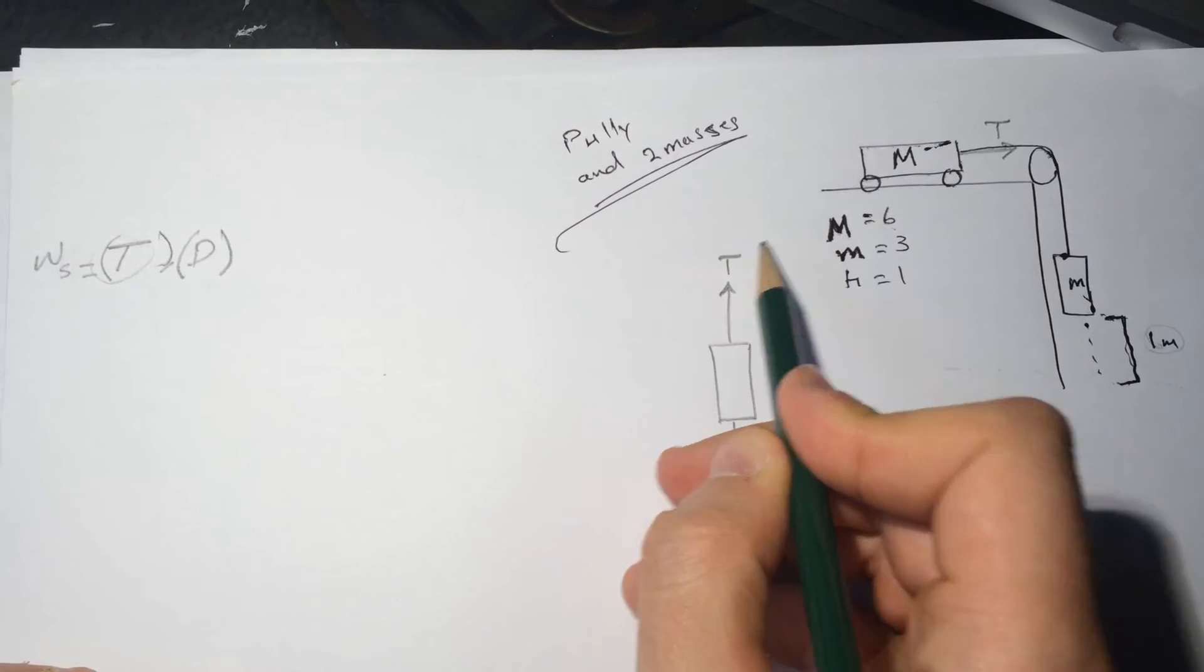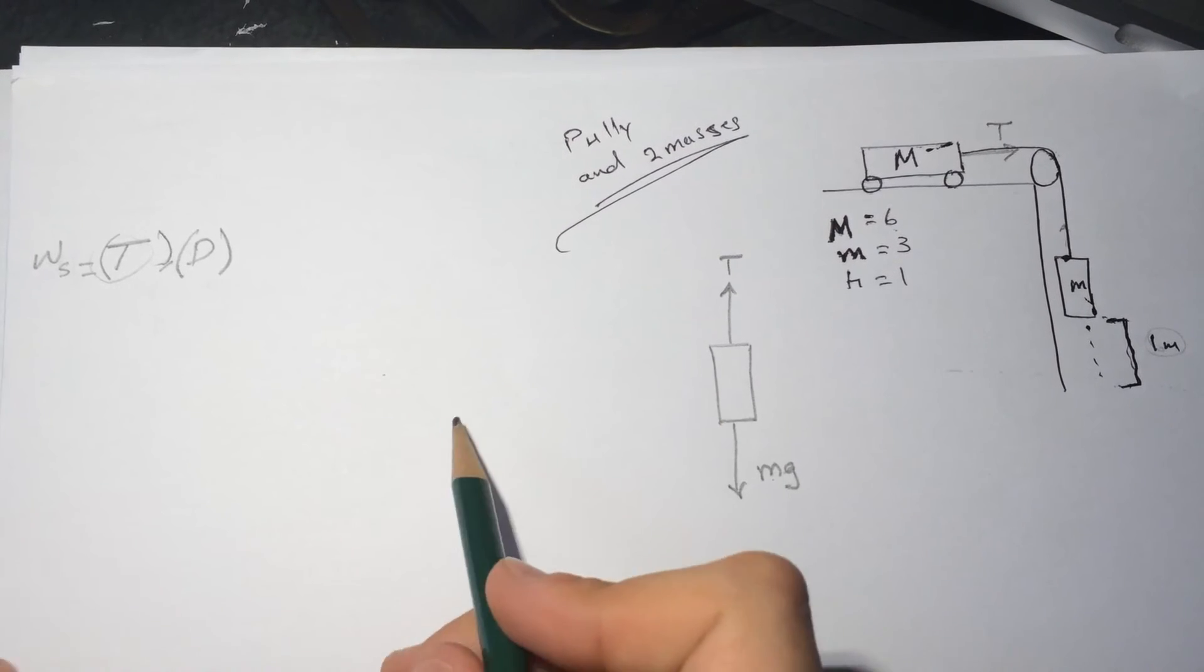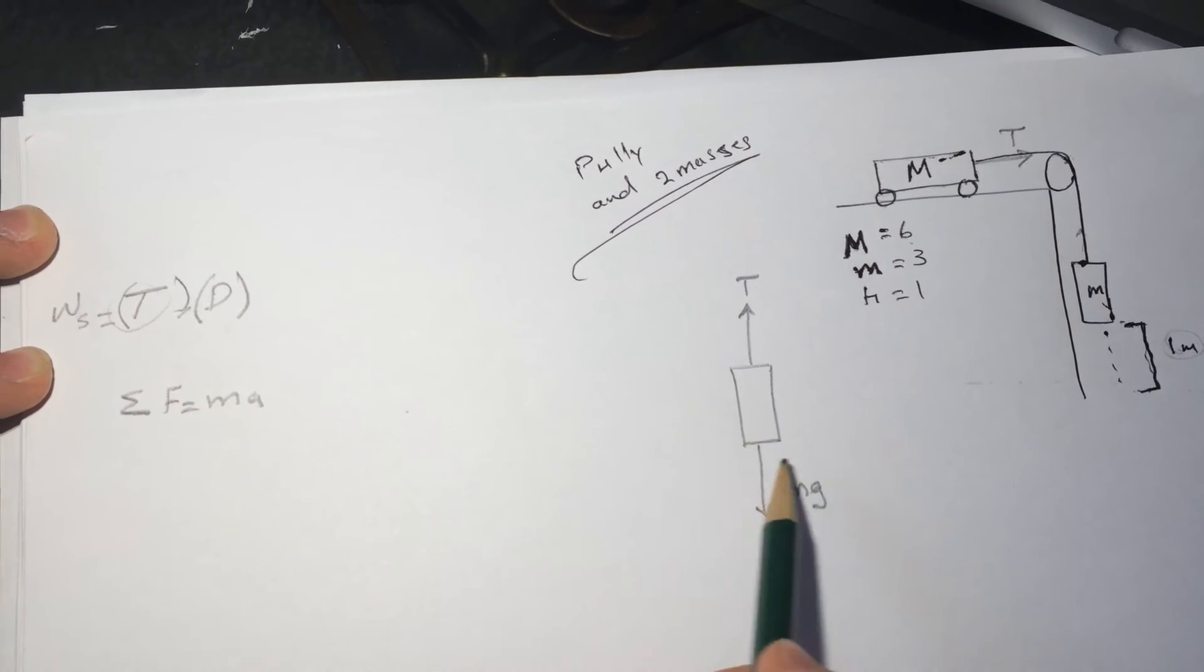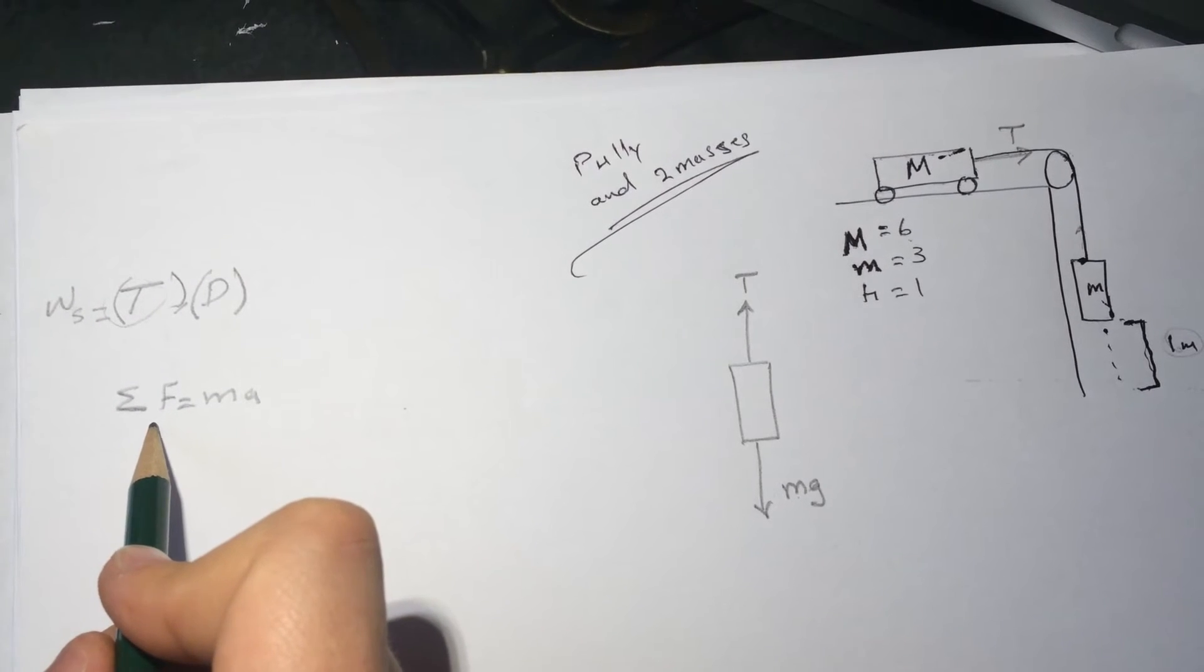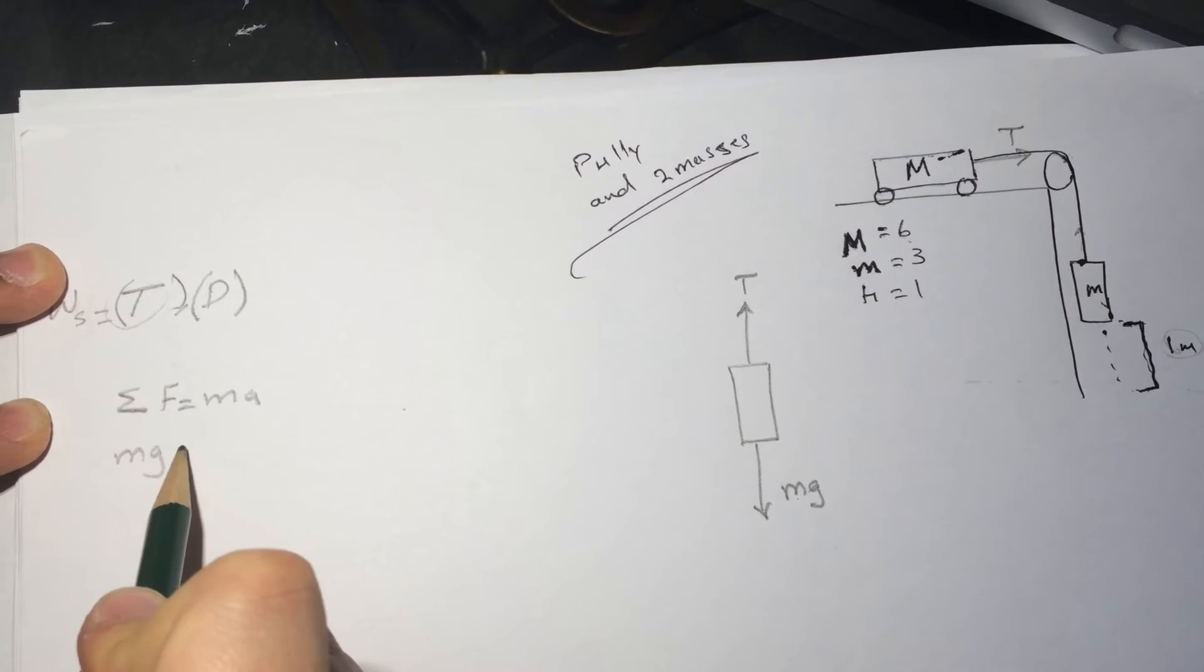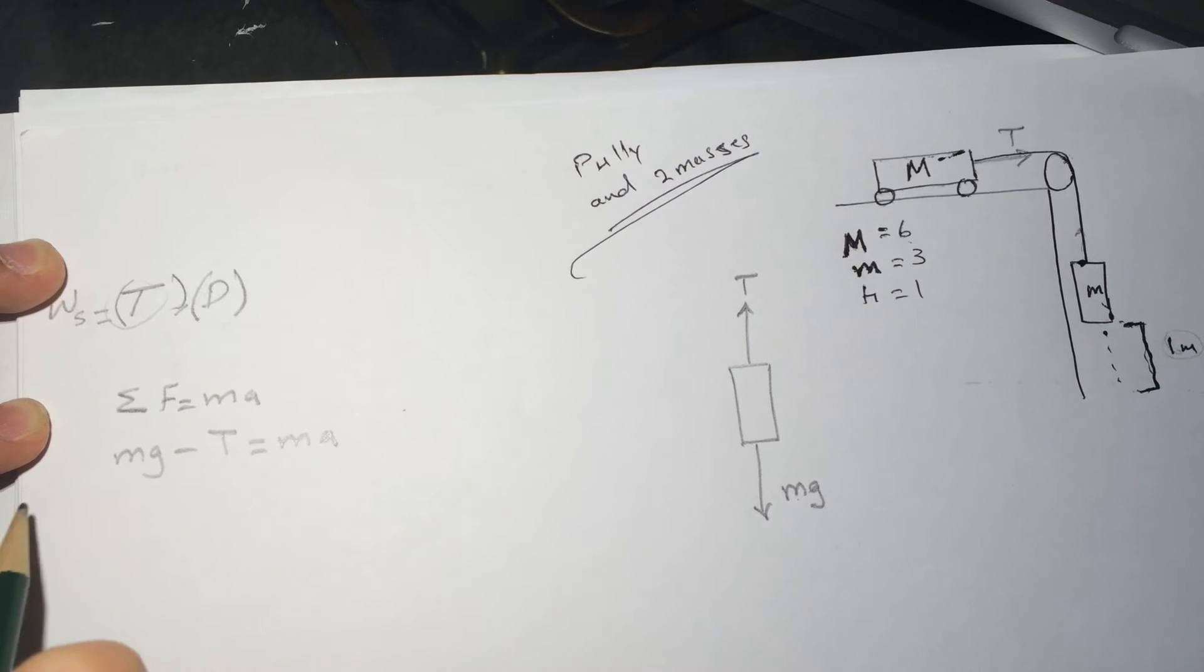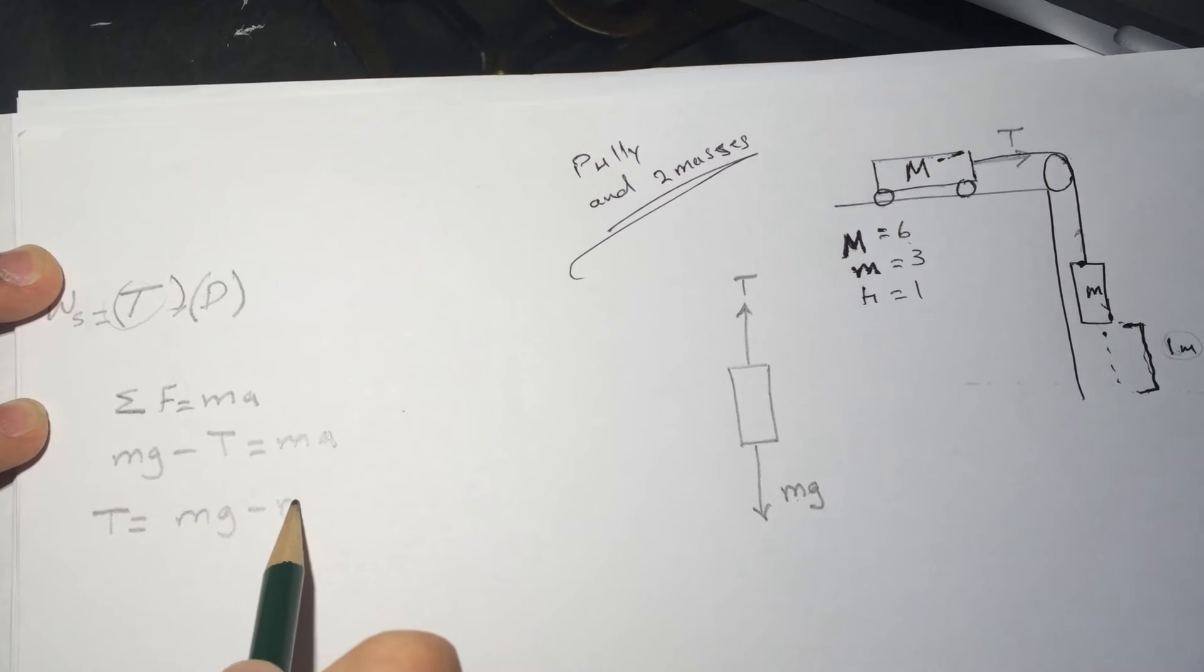If we draw the free body diagram we'll get mg, which is the weight going down, and we've got the tension from the string going up. So the sum of the forces equals ma. Sum of the forces here is mg minus T equals ma, so the tension will be equal to mg minus ma.